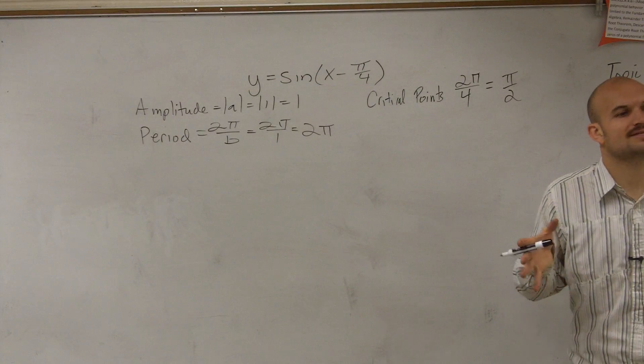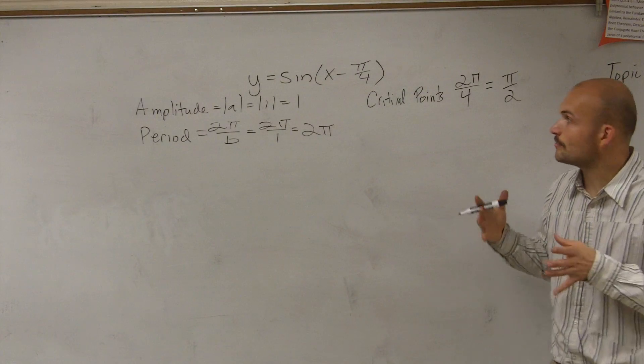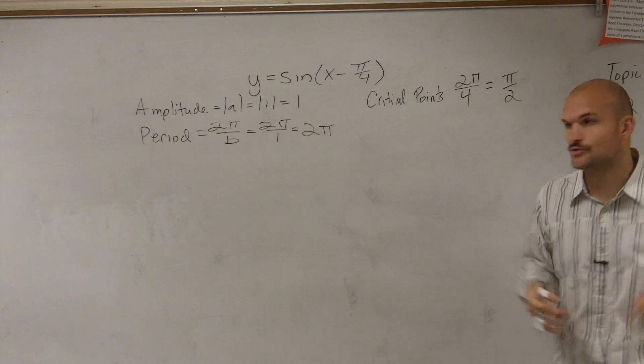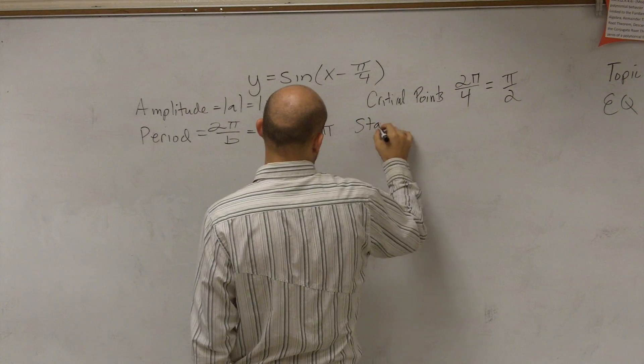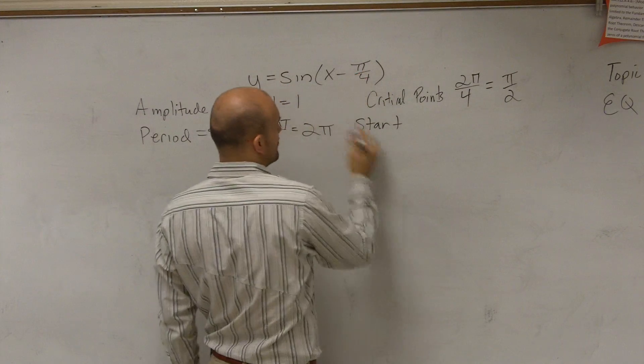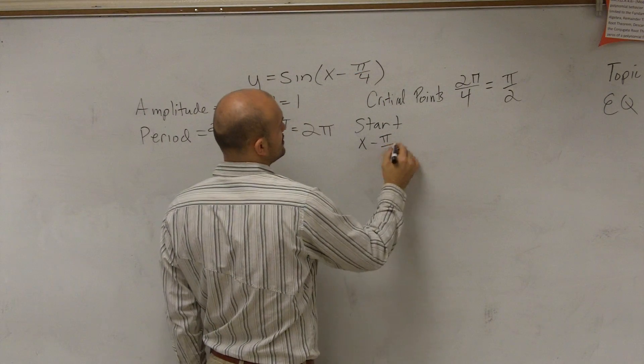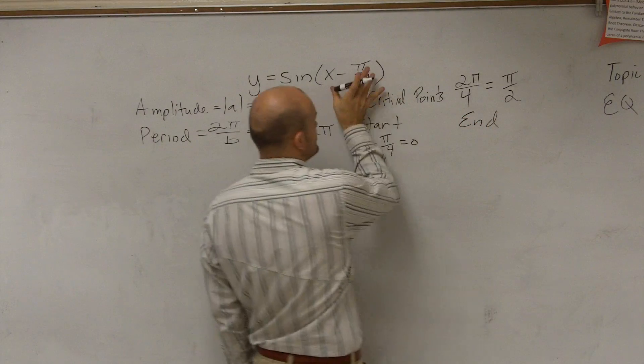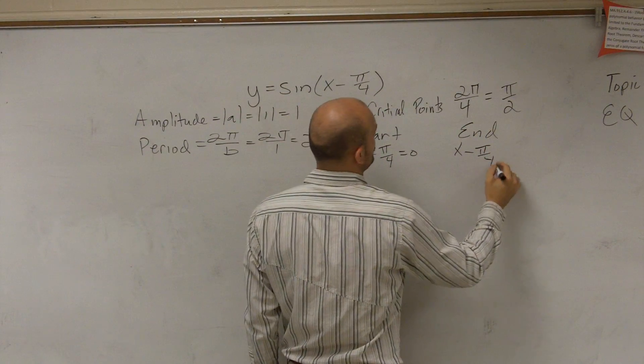Last thing, ladies and gentlemen, is remember we want to start with the start and the end. Remember, in our parent graph, our first period started at 0 and ended at 2π. So what we're going to do to take the start is we take everything that's inside of our function and we set it equal to 0. And then we take the end and we take everything that's inside our function and we set it equal to 2π.